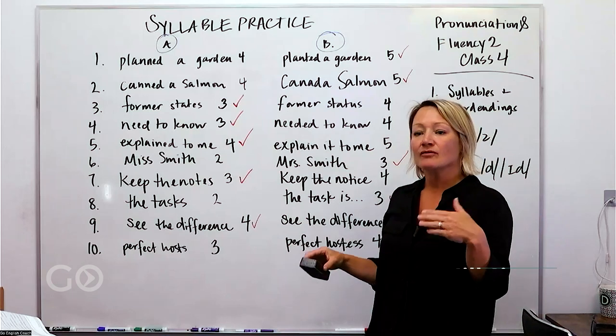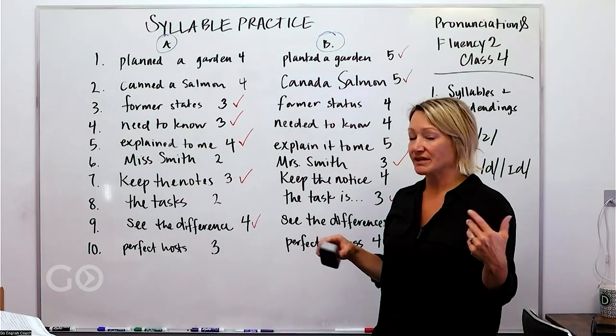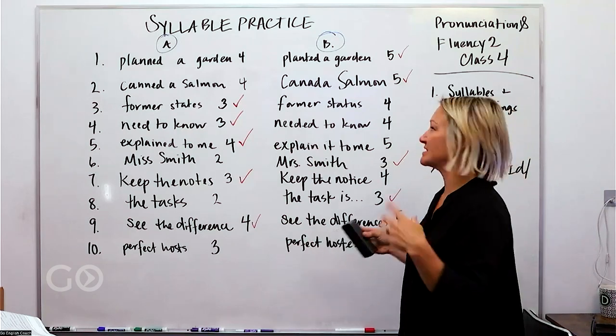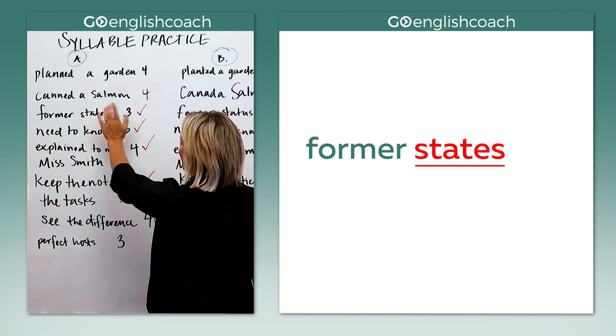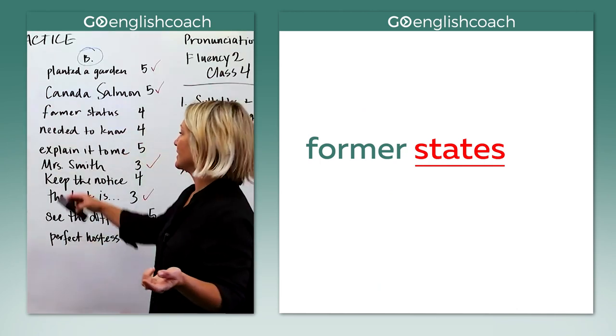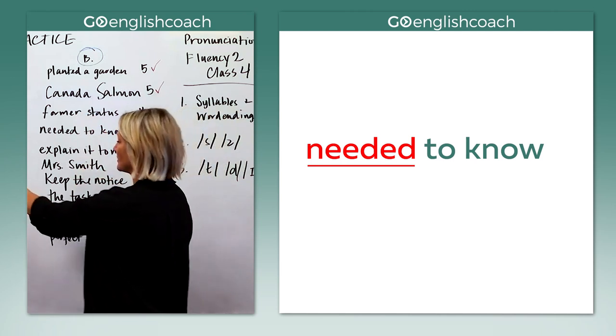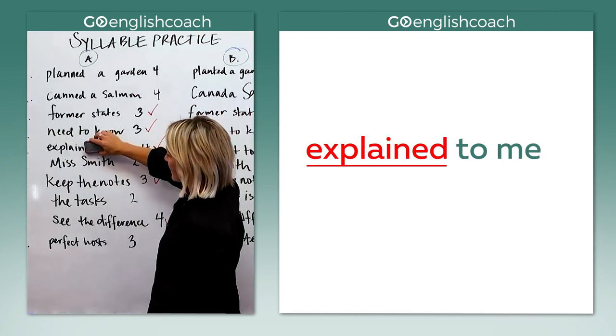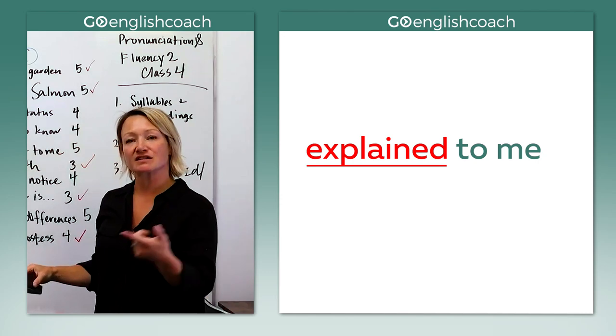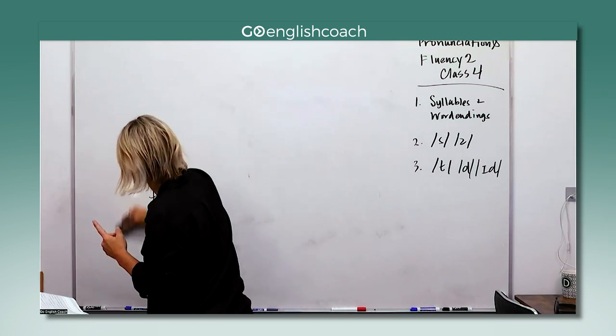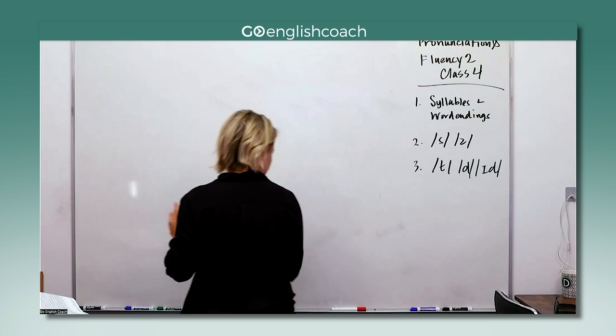Sometimes we have verbs or nouns where you add something at the end and it changes, and sometimes it doesn't. Here we took the word state and added an S and made it states. Here we have the word need. We added ED and it's needed. Here we have the verb explain. We added ED and it's explained. So let's take a look. When does it change and when does it not change the number of syllables in the word? You're going to be like, what? Wait, I don't even understand. What does that mean? And then it's going to be so easy.